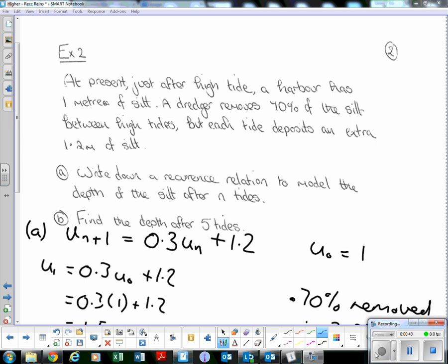A dredger removes 70% of the silt between high tides, but each tide deposits an extra 1.2 meters of silt. Write down a recurrence relation to model the depth of the silt after n tides.